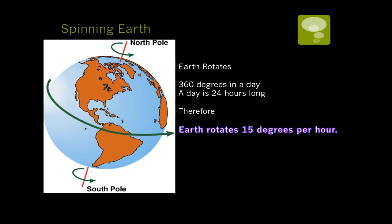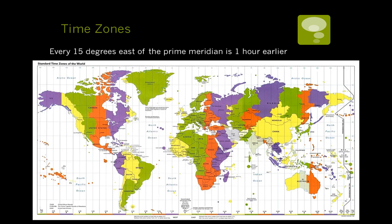The Earth is rotating. 360 degrees — it rotates in a circle in a day, and a day is 24 hours long. Quick math shows that that is 15 degrees per hour. That means every 15 degrees you travel away from the prime meridian, which on this map is here, you will change time zones.